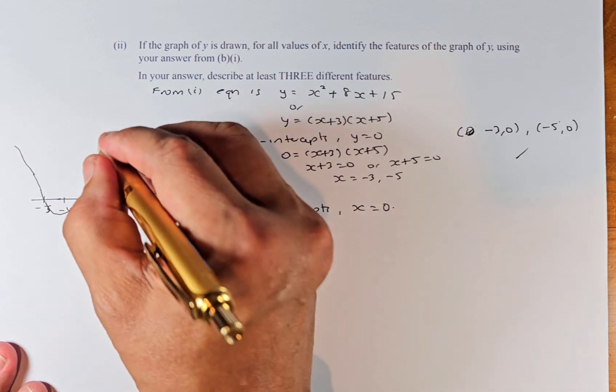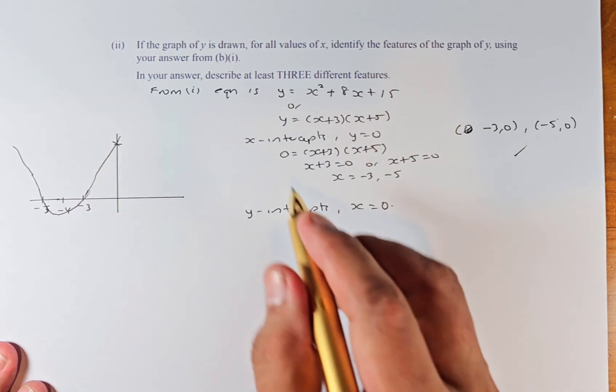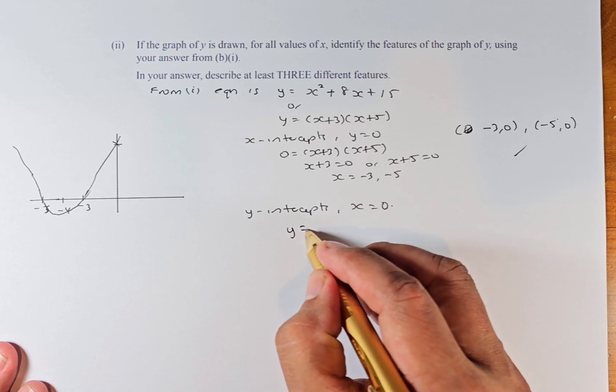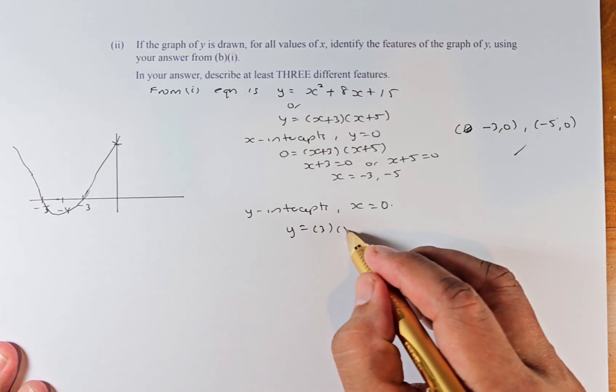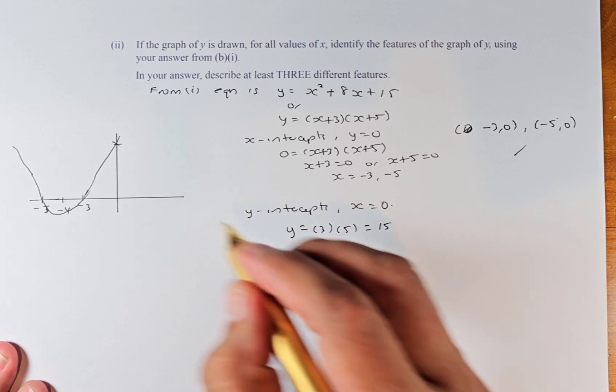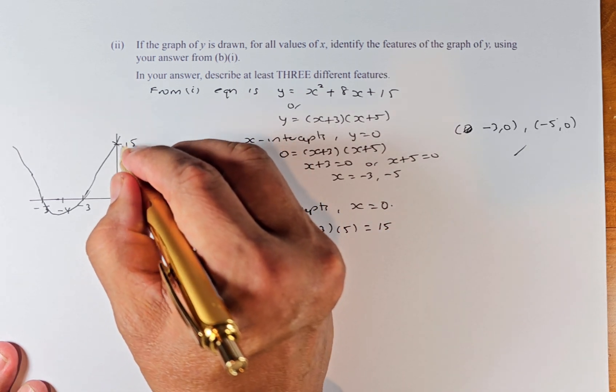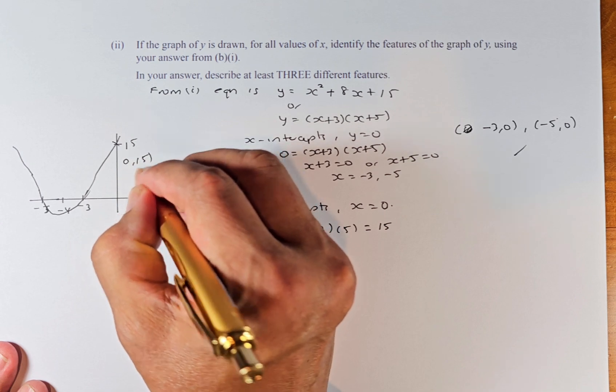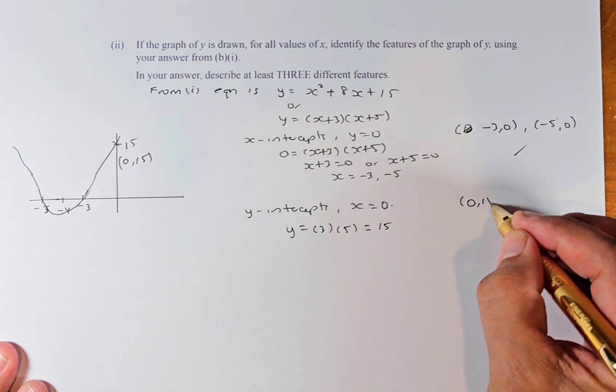And the second feature, we need to find where the point cuts the Y intercept. To find the Y intercept, X equals 0. So now, Y equals 0 plus 3, which is 3, times 0 plus 5, which is 5. So they're going to intercept at 15. So this point is going to be X is 0, Y is 15. So the Y intercept is going to be 0, 15.